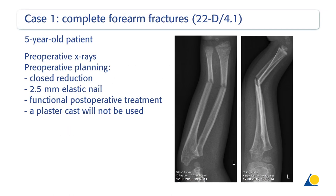The clinical case shows a 5-year-old patient with a complete forearm fracture 22-D/4.1. Preoperative planning includes closed reduction, use of 2.5 mm elastic nail, functional postoperative treatment, and no plaster cast applied.